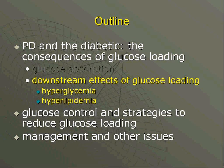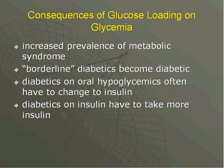Glucose absorption is really quite significant metabolically. People on peritoneal dialysis have an increased prevalence of metabolic syndrome — a conglomerate of insulin resistance, lipid abnormalities, and related conditions. Borderline diabetics who were controlled with diet only will often become overtly diabetic once on PD. Diabetics reasonably controlled on oral hypoglycemics sometimes find those agents no longer sufficient and must be switched to insulin. Diabetics already on insulin often have to increase their insulin dose to counter the increased glucose absorption.